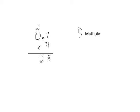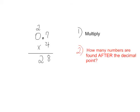Step number 2 then, is for you to ask yourself, how many numbers are found after the decimal point? You see that the decimal point is right here in your problem, and you want to know how many numbers are there after it. In this case, there is only one.